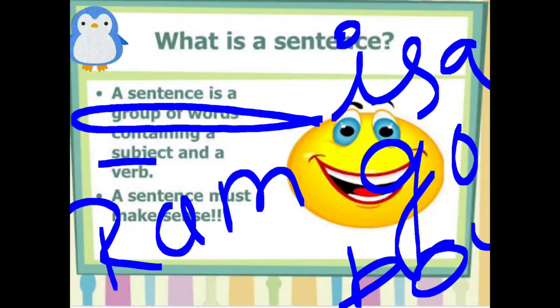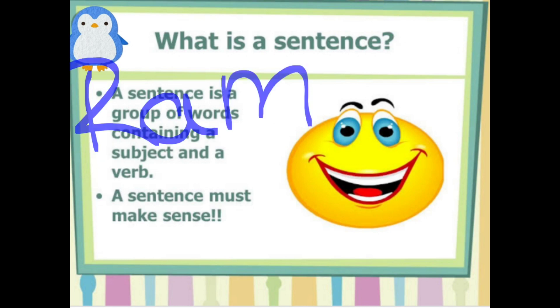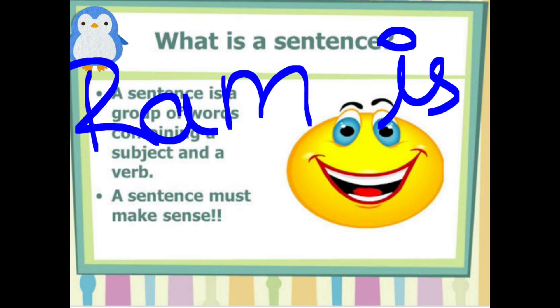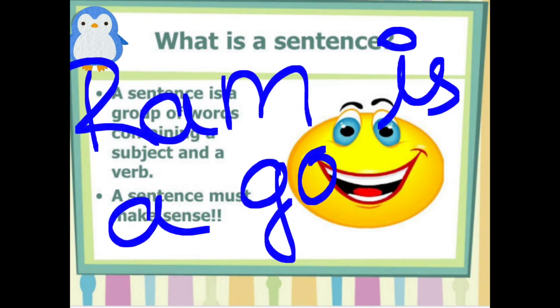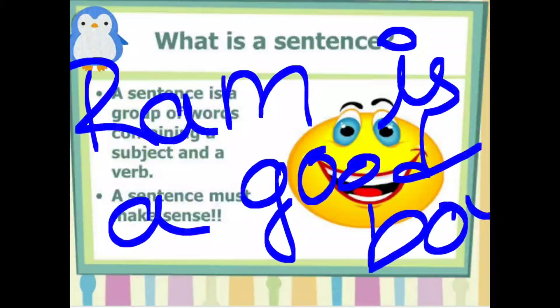Is it giving any sense? Kya aapko isse koi sense nikal raha hai? You will say no. But when you arrange these words properly, look at this: Ram is a good boy. Now are you getting any sense? Definitely you are. So a sentence is a group of words containing a subject and a verb.